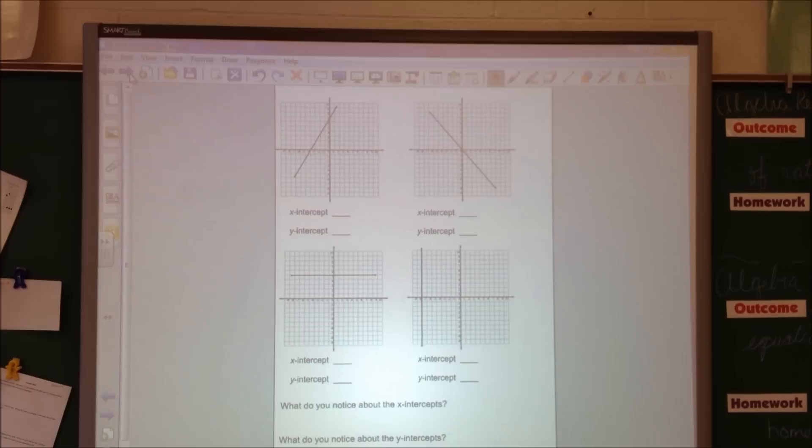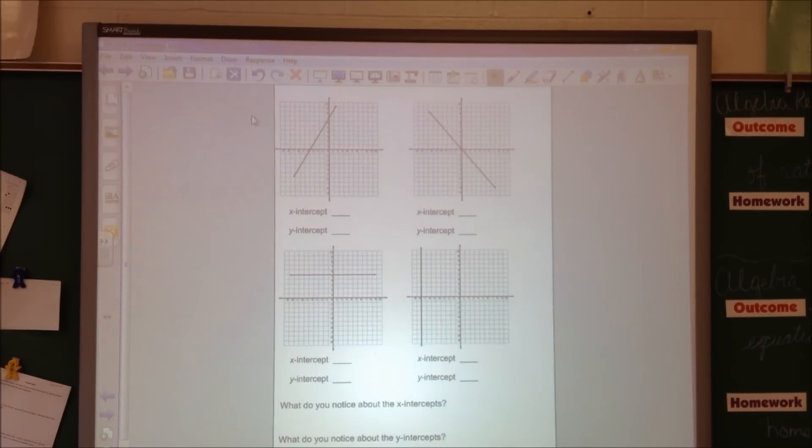For our first graph, when I look up here, my x-intercept is this line right here. And if you look at your paper, that point is x is negative 4, y is 0. The y-intercept, here's the y-axis, so it is right there. That point, if you look at your paper, is located at 0, 7.